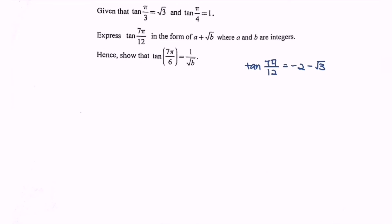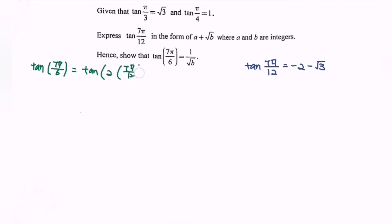Hence, we now find tangent(7π/6). As we can see, tangent(7π/6) equals tangent of (2 × 7π/12), or we can express it as tangent(2θ).